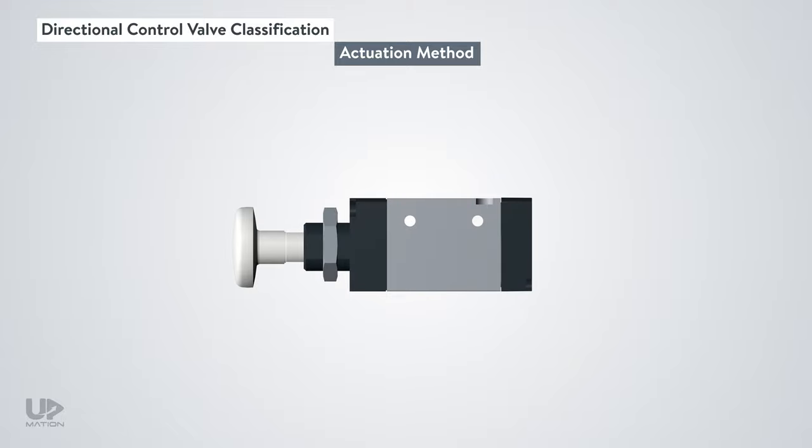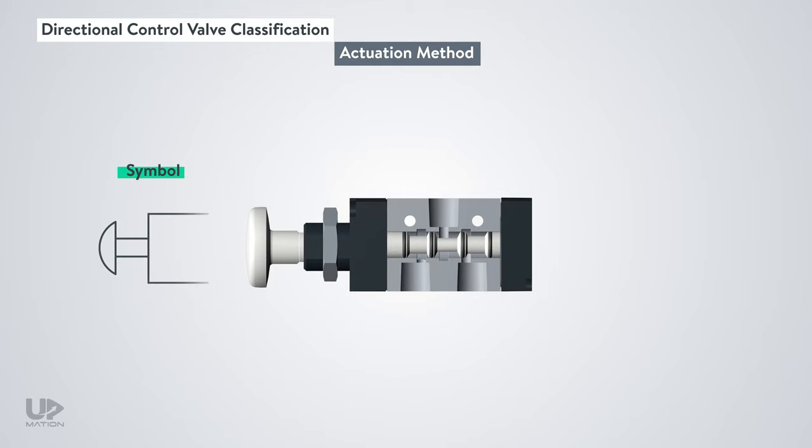We can manually actuate a DCV using a push button, for example. We push the push button and the spool's position changes as you see. And this is the symbol of the push button actuation method. I will explain the symbols of the spool valves further in the next video.